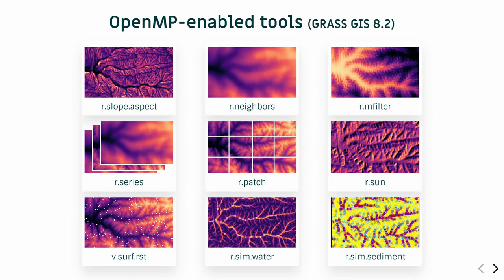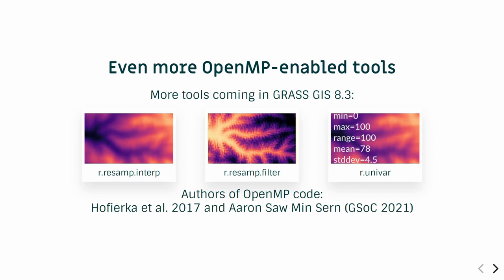These are the currently OpenMP-enabled tools in GRASS GIS 8.2. The top three are doing moving window analysis. Then there is R.Series for aggregation, R.Patch for merging data or filling nulls, R.Sun for solar radiation, R.Series for interpolation from vector points, and R.Sim.Water and R.Sim.Sediment for hydrologic erosion analysis. There will be more coming soon — for example, R.Univar for faster univariate statistics for large data. These were developed by Jaro Hofierka and also by Aaron, who was a Google Summer of Code student last year.